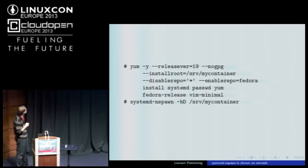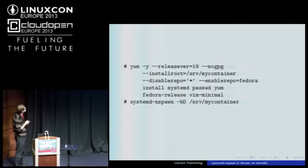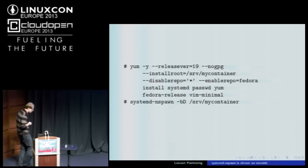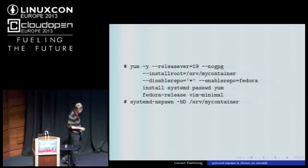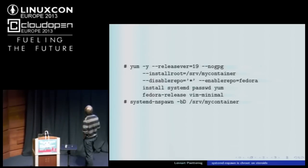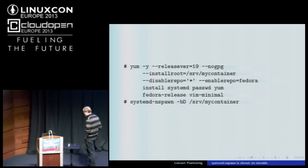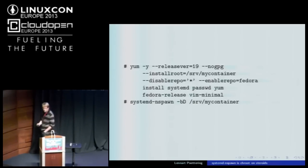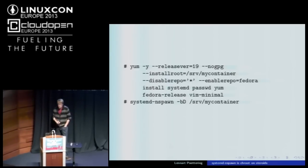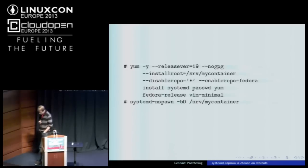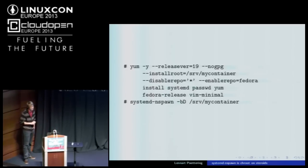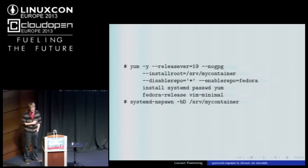After you type that you have the image, and with this command you can start it. It looks a lot like chroot — you specify the path with -D. The lowercase -b means the machine should be booted up rather than just getting a shell. If you traditionally just use the chroot command, it just gives you a shell; it does not boot the machine. The basic difference here is that nspawn can actually boot up the full container as if it was a real machine.